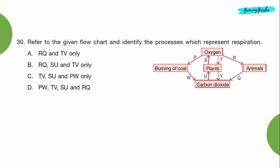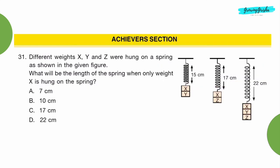Question 30: Refer to the given flow chart and identify the processes which represent respiration. Option A: RQ and TV only. Achievers section. Question 31: Different weights X, Y and Z were hung on a spring as shown in the given figure. What will be the length of the spring when only weight X is hung on the spring? Option B: 10 cm.